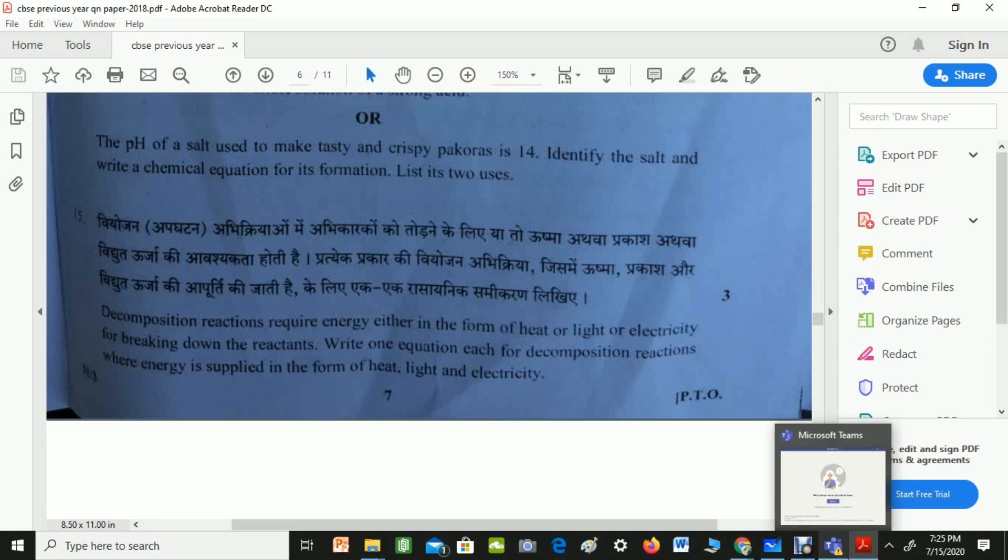This is actually a CBSE previous year question paper from 2018 and I am taking number 15 that is coming from the first lesson. The question is decomposition reactions require energy either in the form of heat or light or electricity for breaking down the reactants. Write one equation each for decomposition reactions where energy supplied in the form of heat, light and electricity.